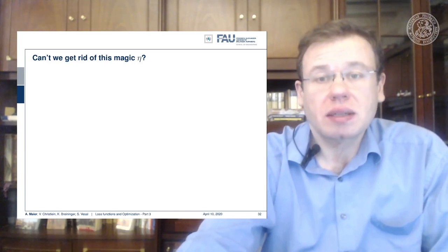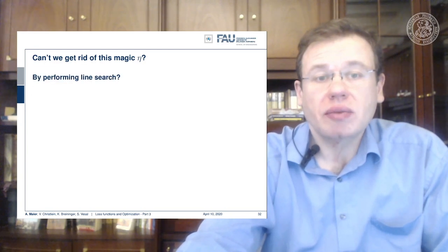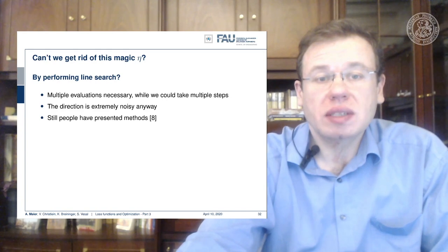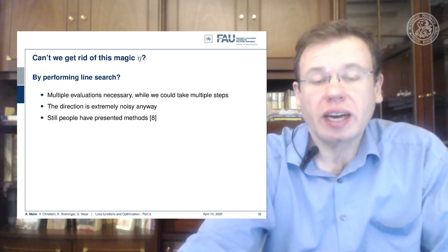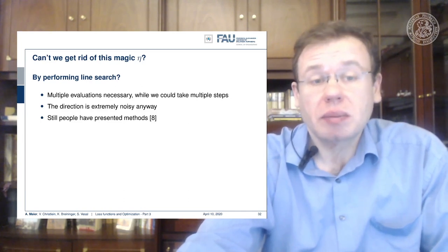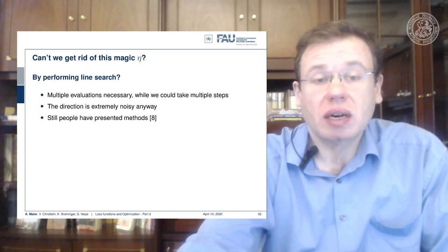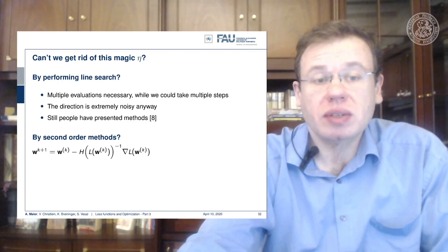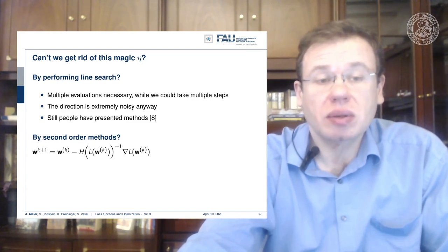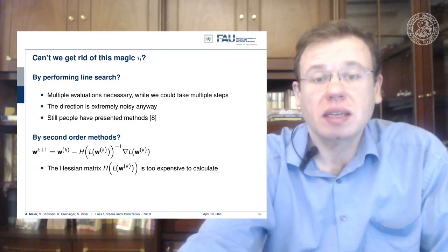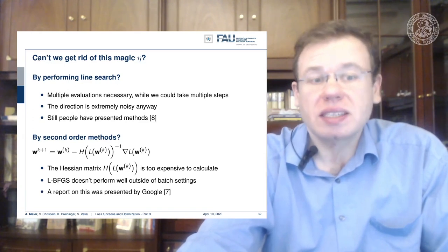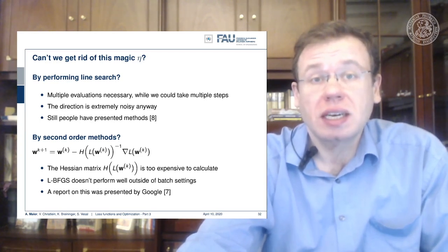You may ask: can't we get rid of this magic ETA? Quite a few people suggest doing line search, which needs you to estimate the optimal ETA in every step — multiple evaluations are necessary, and the direction is extremely noisy anyway, so this is not state of the art. People have also suggested second order methods, but those require computing the Hessian matrix, which is very expensive. There are BFGS methods, but they typically don't perform very well if you are operating outside of the batch setting — not great for mini-batches. There is a report on that by Google.